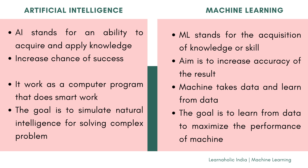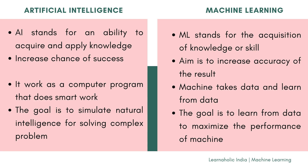In Artificial Intelligence, it works as a computer program that does smart work, whereas in Machine Learning it is a simpler concept where the machine takes data and learns from it. The goal of Artificial Intelligence is to simulate natural intelligence to solve complex problems, whereas the goal of Machine Learning is to learn from data on certain tasks to maximize the performance of the machine on those tasks.